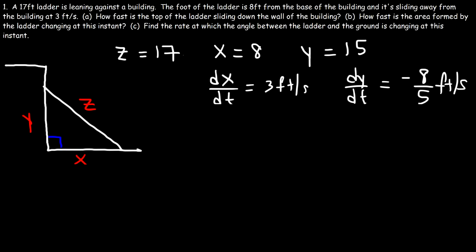Now let's move on to part C: find the rate at which the angle between the ladder and the ground is changing at this instant. The angle between the ladder and the ground is theta. We need to relate theta to X, Y, or Z using trig functions. Reviewing SOH-CAH-TOA: sine theta equals opposite over hypotenuse, which is Y over Z; cosine theta equals adjacent over hypotenuse, which is X over Z; and tangent theta equals opposite over adjacent, which is Y over X.